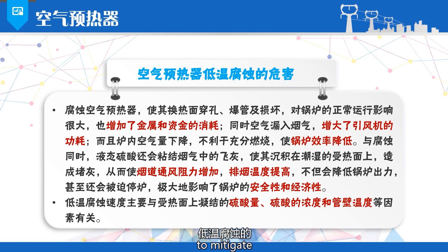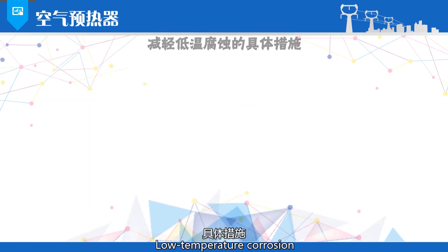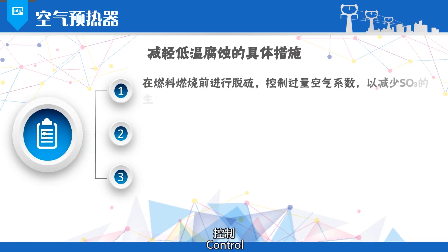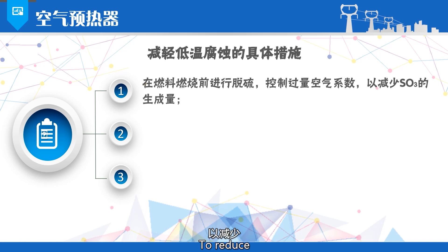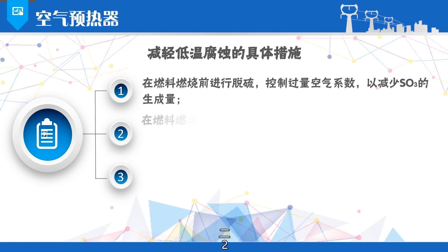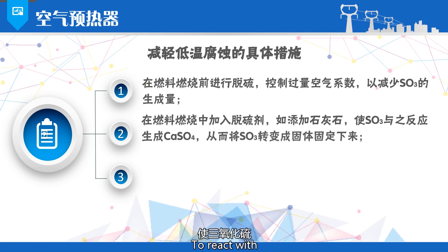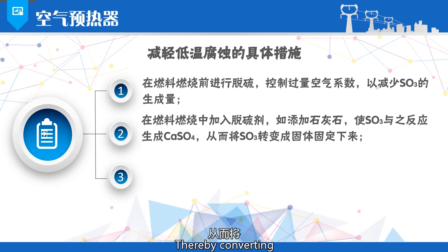The speed of low-temperature corrosion is mainly related to the amount of sulfuric acid condensed on the heat receiving surfaces, the concentration of sulfuric acid, and the tube wall temperature, among other factors. Specific measures to mitigate low-temperature corrosion include: first, desulfurize the fuel before combustion, and control the excess air coefficient to reduce the amount of sulfur trioxide generated. Second, add desulfurizing agents during fuel combustion, such as adding limestone to react with sulfur trioxide, forming calcium sulfate, thereby converting sulfur trioxide into a solid and fixing it.